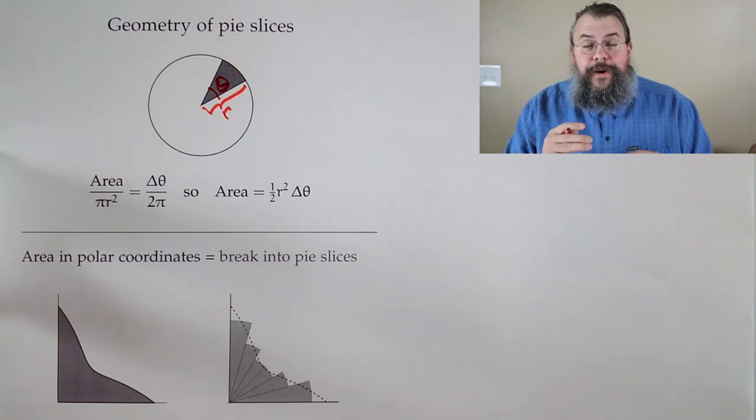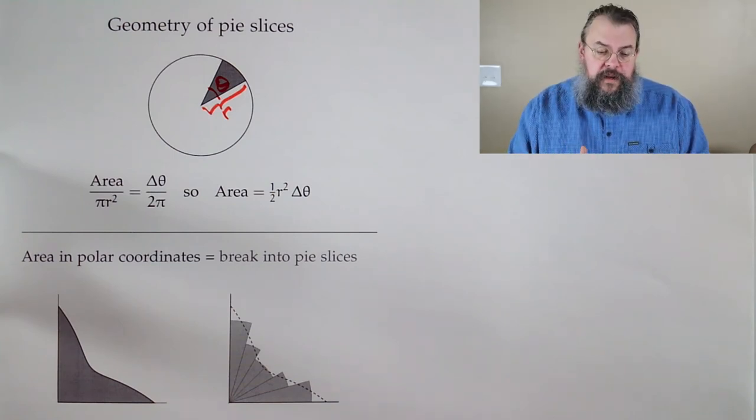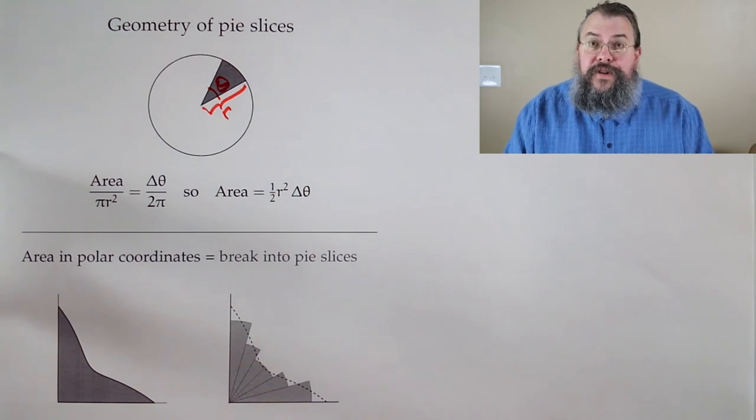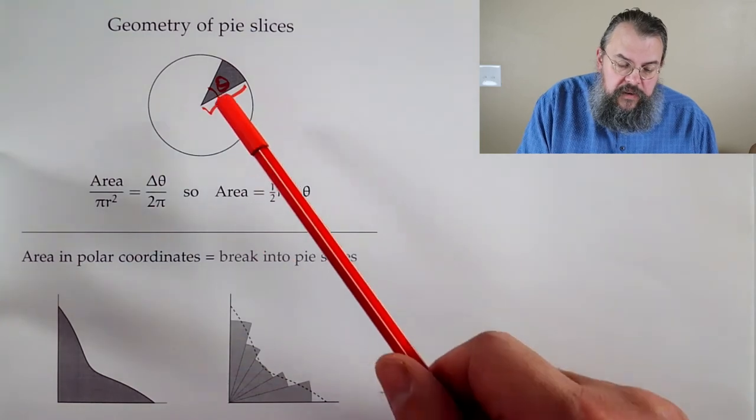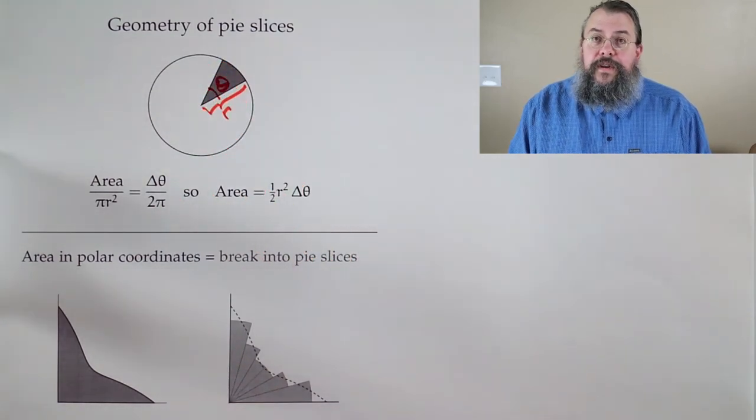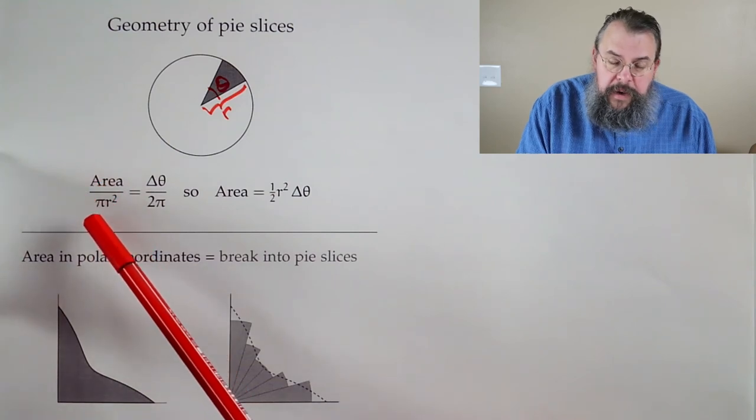Now, we need to understand what's the area of one of these pie slices, because that's what we're going to build off of. And it's actually pretty straightforward. We say, OK, well, let's think of it as how much of the circle are we using up? Well, we can take the area we want, divided by pi r squared.